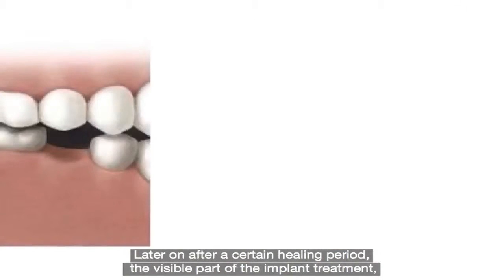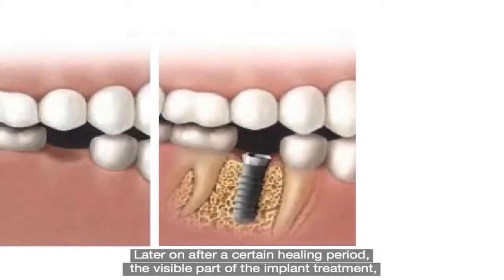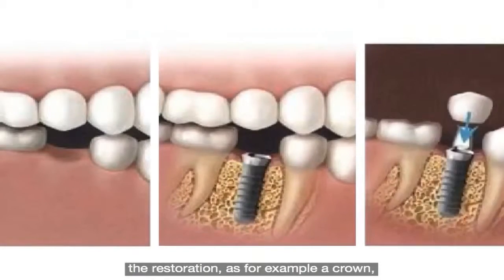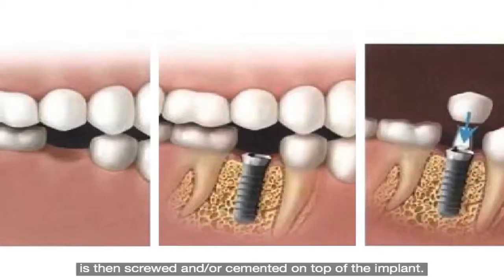Later on, after a certain healing period, the visible part of the implant treatment — the restoration, for example a crown — is then screwed and/or cemented on top of the implant.